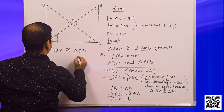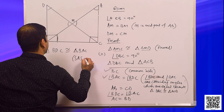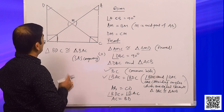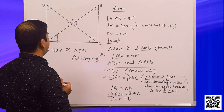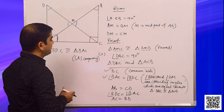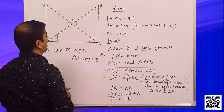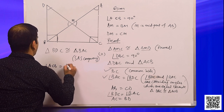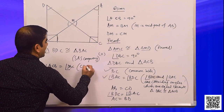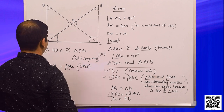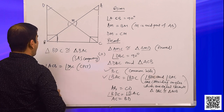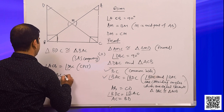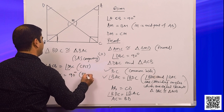So we have proved triangle BDC is congruent to triangle BAC. As these two triangles are congruent, angle ACB is equal to angle DBC as corresponding angles. Since angle ACB is equal to 90 degrees, angle DBC is also equal to 90 degrees. This is proved.